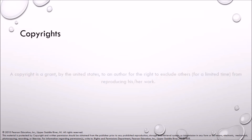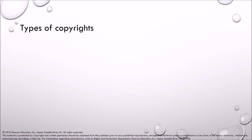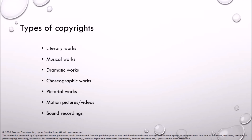Copyrights. A copyright is a grant by the United States to an author for the right to exclude others, for a limited time, from reproducing his or her work. Types of copyrights include literary works, musical works, dramatic works, choreographic works, pictorial works, motion pictures or videos, and sound recordings.